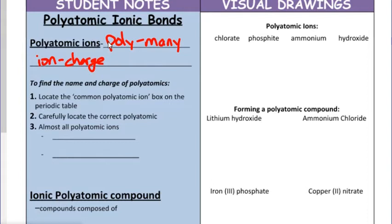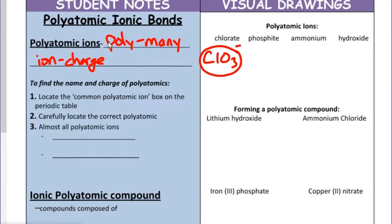Poly just means many atoms grouped together that still have an overall charge. An example is chlorate, which is one chlorine and three oxygen atoms grouped together with an overall negative one charge. If you're wondering where these names come from, these ions are located in the bottom right corner of your green periodic table, listed as the common polyatomic ions. We need to know when to pull that information based on clues in the name or formula.